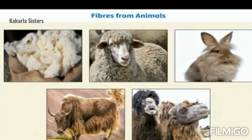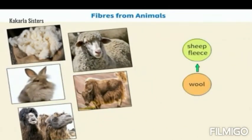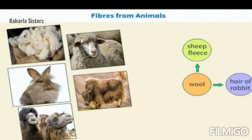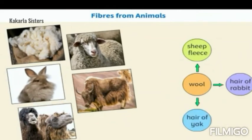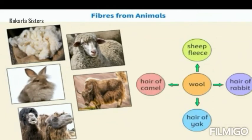Fibers from animals are in the form of wool. Wool is the fleece of sheep or the hair of rabbit, yak and camel, which is woven into woolen yarn. Wool is knitted either at home or in factories to make sweaters and pullovers to keep us warm during winters.